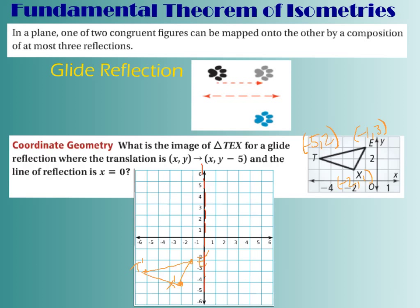I need to reflect each of those points over the Y-axis. For E prime, I go in one unit, so I go out one. There's E double prime. For T prime, I count 5 units in and 5 units out — there's T double prime. And there's X double prime. Now I'm going to connect these dots and I have my final triangle: T double prime, E double prime, X double prime. You can see that not only did I move its location within the graph, but I also flipped the orientation. That is called a glide reflection.